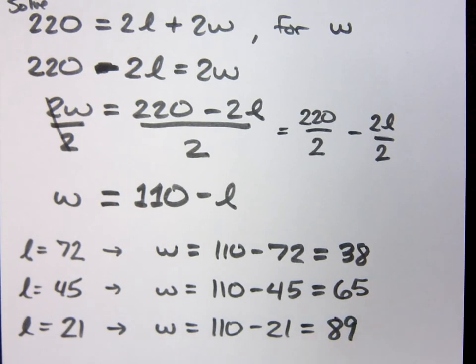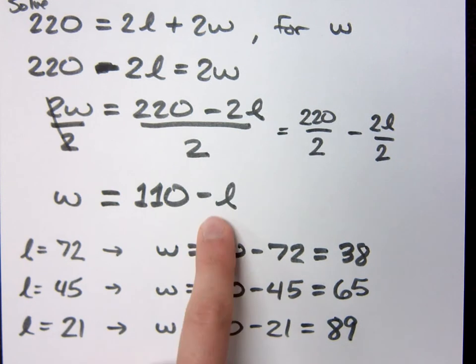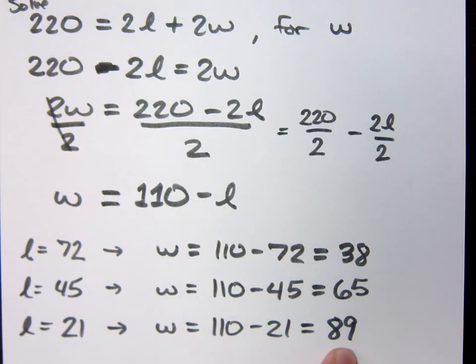So what I have is a formula. It doesn't matter what the guy gives me. Understanding that the total perimeter is 220, I can just plug in the L that he gives me and come up with a W very easily.